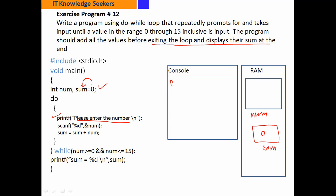"Please enter the number" — cursor आगे आएगा। हमने कोई number input करना है — input statement wait कर रही है। जैसे मैंने 10 दिया, enter किया — address of num पर 10 store हो गया। Expression: sum = sum + num — sum में 0 था, num में 10 था — 10 + 0 = 10, यह answer sum में store हो जाएगा। 0 replace हो गया 10 से। अब एक और value enter करते हैं।